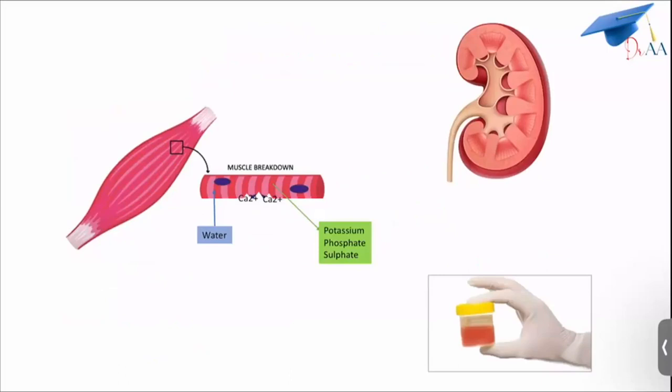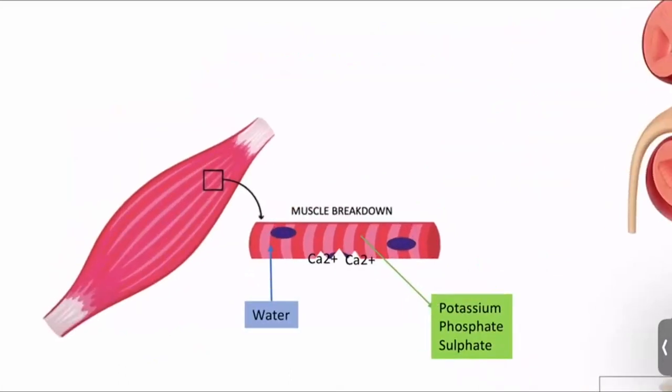What happens in rhabdomyolysis? This is the muscle. We'll take one fiber of the muscle.